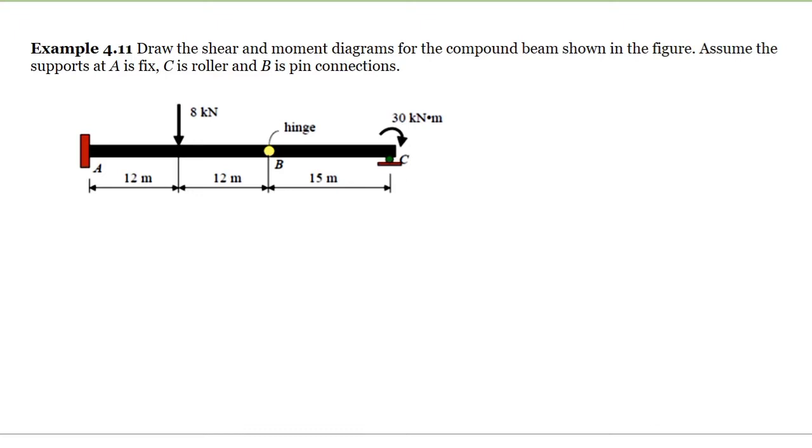We are asked to draw the shear and moment diagram for the compound beam shown in the figure. Assume that point A is fixed, C is a roller, and B is a pin connection.